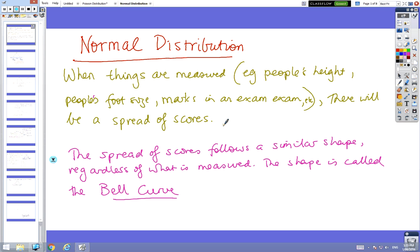Anything that can be measured will have a spread of scores, and this spread of scores follows a similar shape regardless of what's being measured. This shape is called the bell curve.